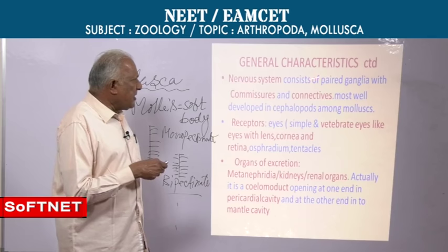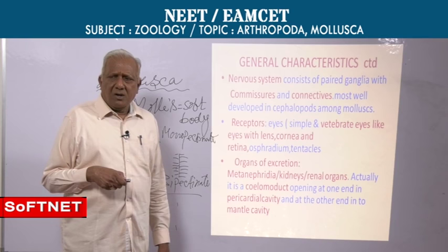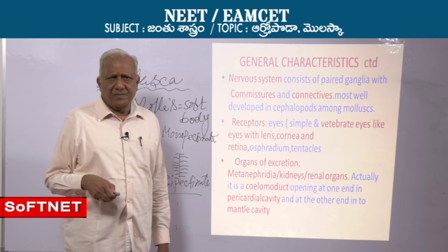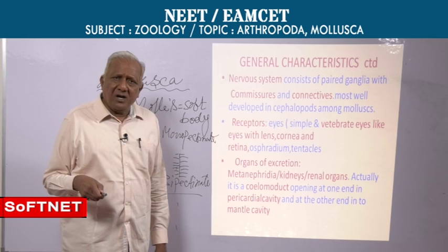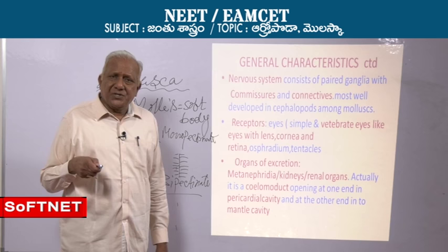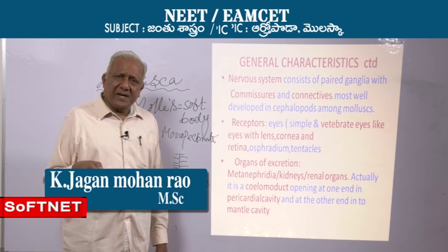Now, coming to this nervous system. The nervous system is unique. You find a series of paired ganglia, similar and dissimilar. Similar ganglia are connected by nerves called commissures. Dissimilar ganglia are connected by nerves called connectives. So, the nervous system consists of a series of paired ganglia connected either by commissures or connectives.